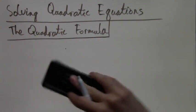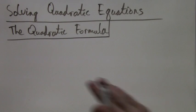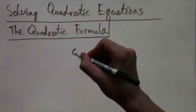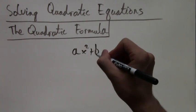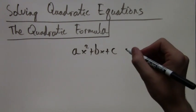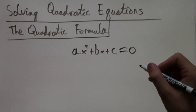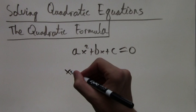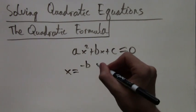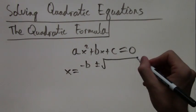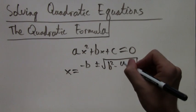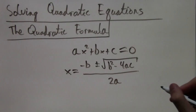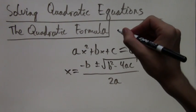So what is the quadratic formula? If you have the quadratic equation ax squared plus bx plus c equals zero, where a, b, and c are the coefficients of the x squared, the x, and just the constant term, then x equals negative b plus or minus the square root of b squared minus 4ac all over 2a.